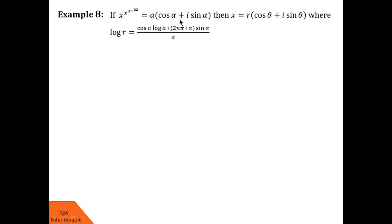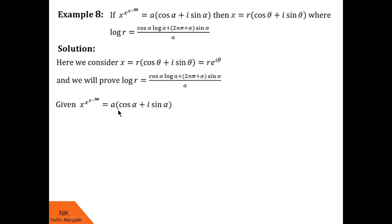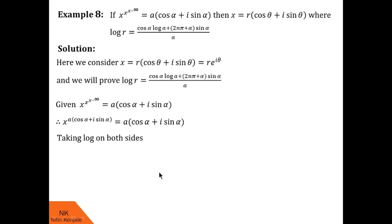In example 8, given that x raised to x raised to x up to infinity equals A(cos alpha + i sin alpha), we have to prove x equals R(cos theta + i sin theta) where log R equals (cos alpha into log A plus (2n pi + alpha) into sin alpha) divided by A. We consider x equals R e raised to i theta. Using the given statement recursively, x raised to x raised to x up to infinity can be written as x raised to A(cos alpha + i sin alpha) equals A(cos alpha + i sin alpha), substituting the infinite power value.